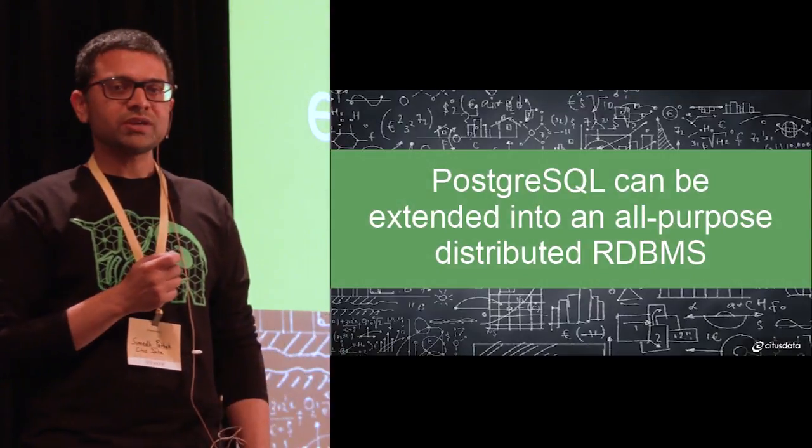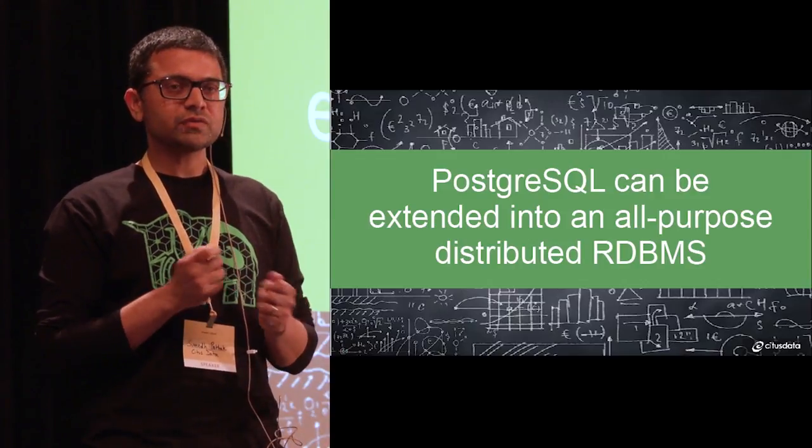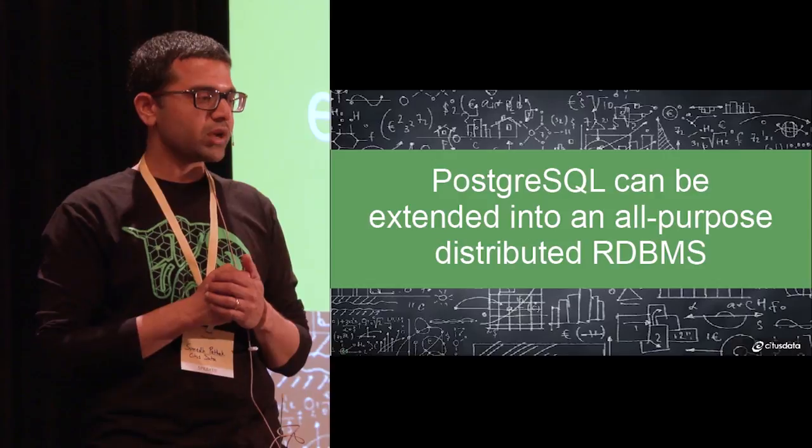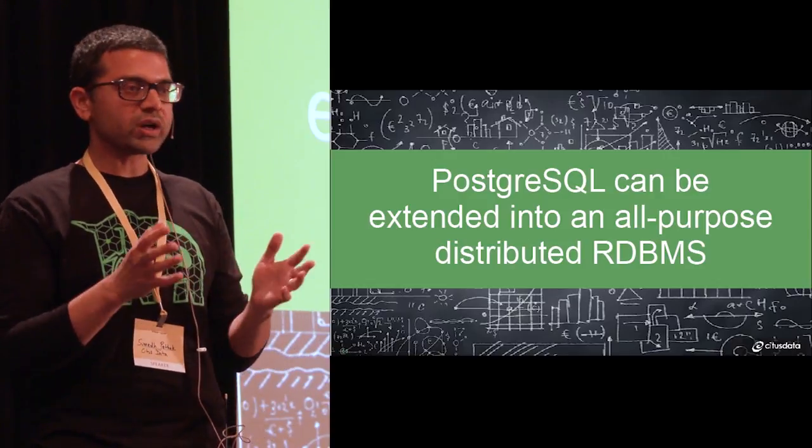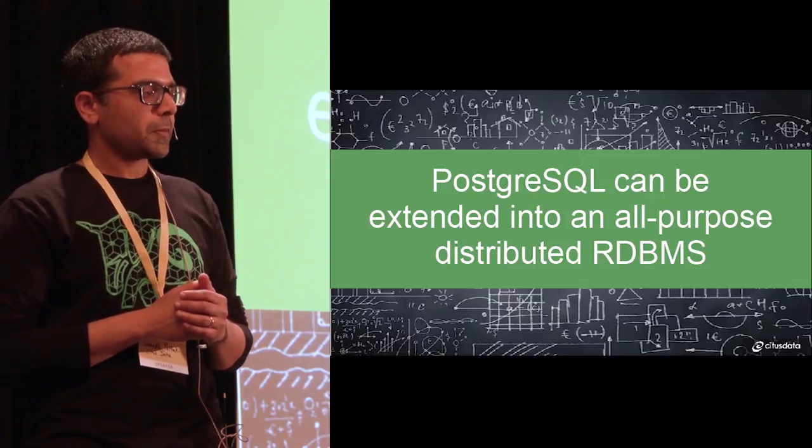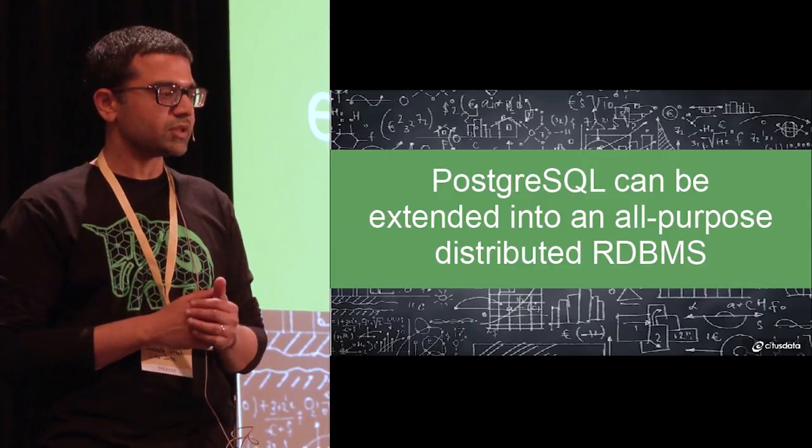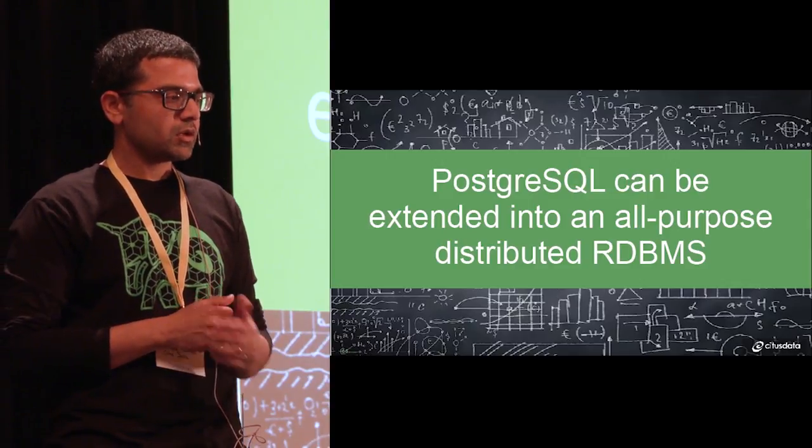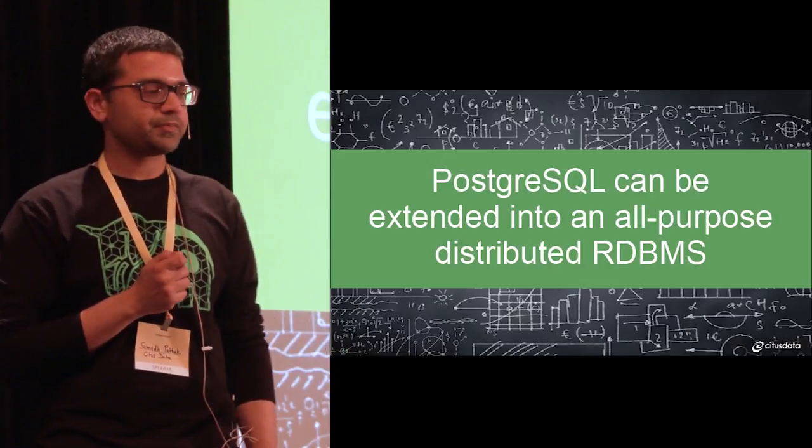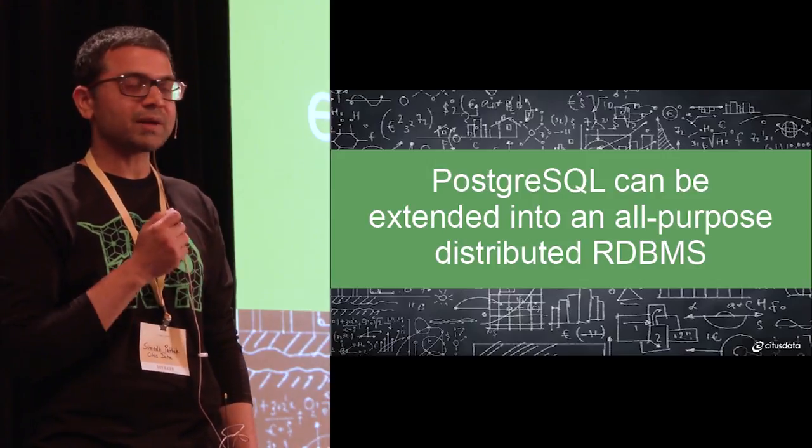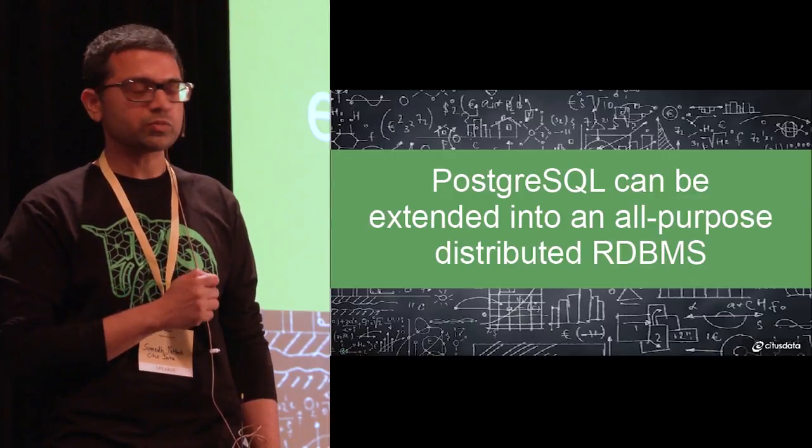And what this means is that PostgreSQL can be extended into an all-purpose distributed relational database. You can take these extensions and features and mix and match them to adapt PostgreSQL to your use case. If your data was small enough, you could always do that on a single node. With Citus now, you can distribute the data and parallelize your queries, thus scaling to your future data needs. Postgres has been in development for about 20 years, but the development is just ramping up. In Postgres 10, we got features like parallel queries, logical replication, and declarative partitioning. And there's much more in Postgres 11.